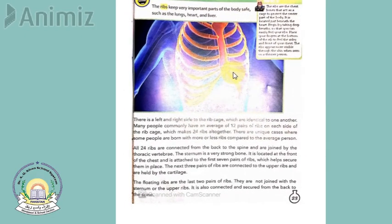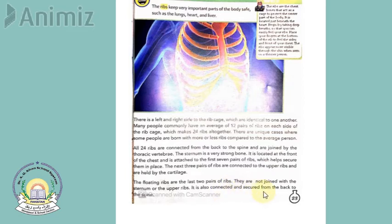To summarize, ribs are divided into three sections: the first 7 pairs are connected to the sternum, the next 3 pairs are connected to the upper ribs and held by cartilage, and the last 2 pairs are floating and connected only to the spine. There are 24 ribs altogether — 12 pairs on each side — with the strong sternum securing them in place. The rib cage protects important parts of the body such as the lungs, heart, and liver, and the ribs are connected to the thoracic vertebrae of the spine.